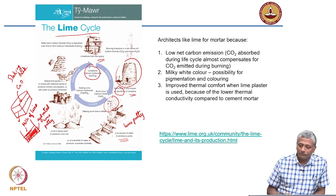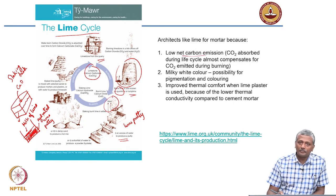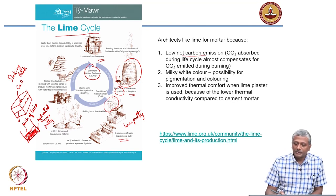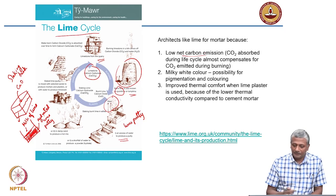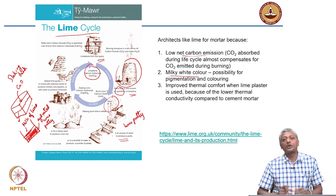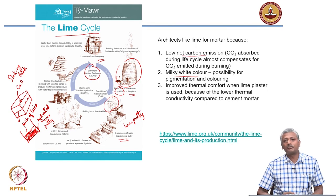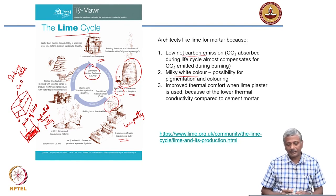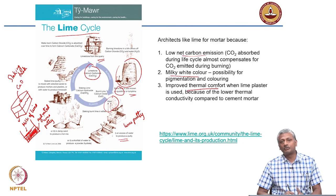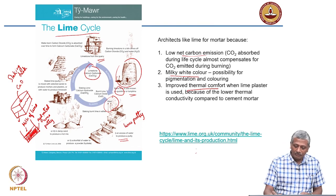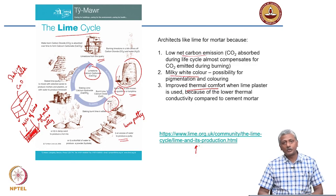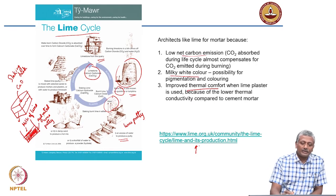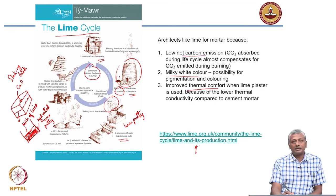Architects like lime for mortar because of its very low net carbon emission — not zero, but very low, as most of the CO₂ emitted during burning gets reabsorbed during the process of hardening. Pure lime mortar has a milky white color, which is very good for pigmentation — you can color it with different pigments. When lime plaster is used, you get improved thermal comfort as opposed to cement plaster because of its lower thermal conductivity. There are also websites dedicated to the use of lime, especially in heritage monuments, covering topics like Scottish lime kilns.